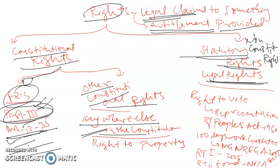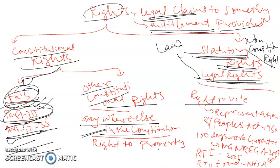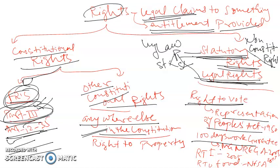Non-constitutional rights are also called statutory rights or legal rights. These are provided by any law — by Parliament or state legislature. Examples include: the right to vote, provided by the Representation of People's Act 1950; the 100 days of work guarantee provided by MGNREGA 2005; the right to information provided by RTI 2005; and the right to food provided by the National Food Security Act 2013.